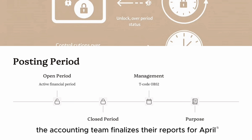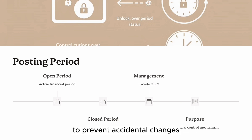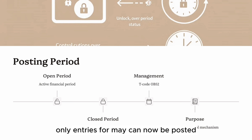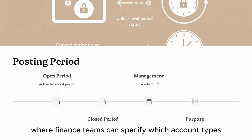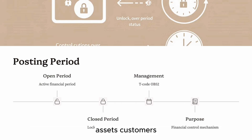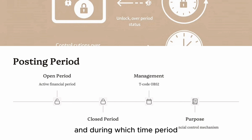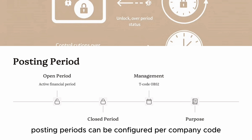Use case: when the accounting team finalizes their reports for April, to prevent accidental changes they close April and open May — only entries for May can now be posted. This is controlled using T-code OB52, where finance teams can specify which account types — assets, customers, vendors — are allowed to post and during which time period.